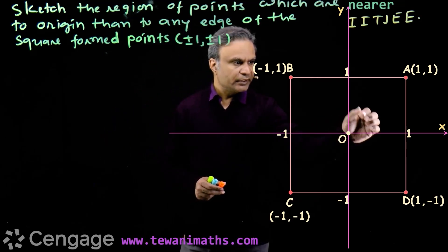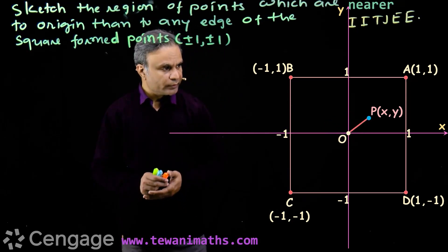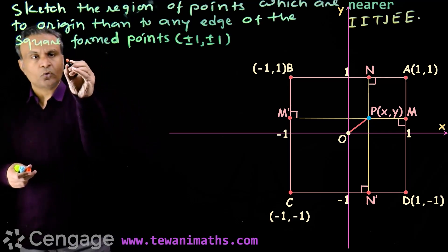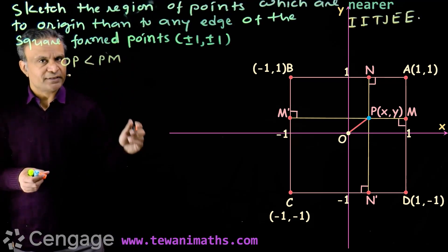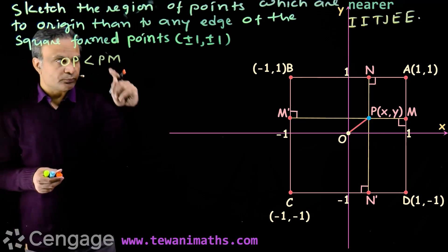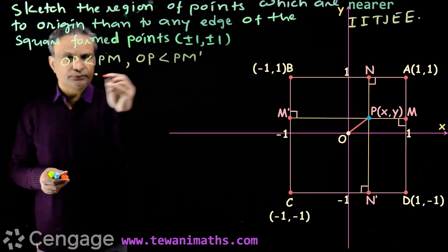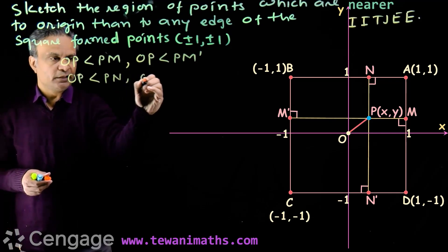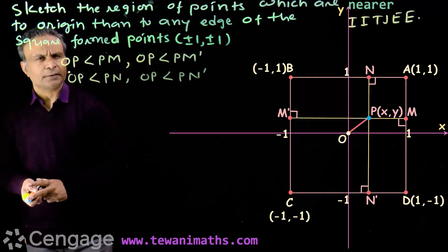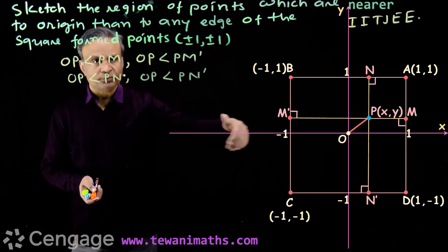Now we consider some point P having coordinates (X, Y). We join point P with the origin, and from point P draw perpendiculars to all the edges. According to the condition, we must have OP less than PM, OP less than PM', OP less than PN, and OP less than PN', where M, M', N, and N' are the feet of perpendiculars from point P upon the edges of this square.